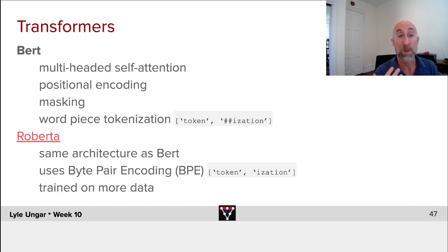In your worksheet, you're mostly going to use Roberta, which has the exact same architecture as BERT, uses a similar, actually a byte-pair encoding, very much like the word piece tokenization, and it's trained on more data, more, more, more, more data, better models.